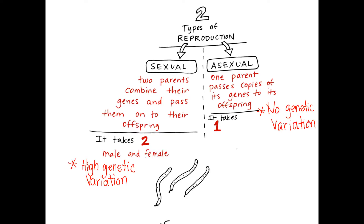Here are the notes on reproduction. We're going to be talking about two types of reproduction: sexual reproduction and asexual reproduction. The most important points are written in red. With sexual reproduction, we're going to have two parents and they're going to combine their genes and pass them on to their offspring — it takes a male and a female parent — and we're going to have high genetic variation.